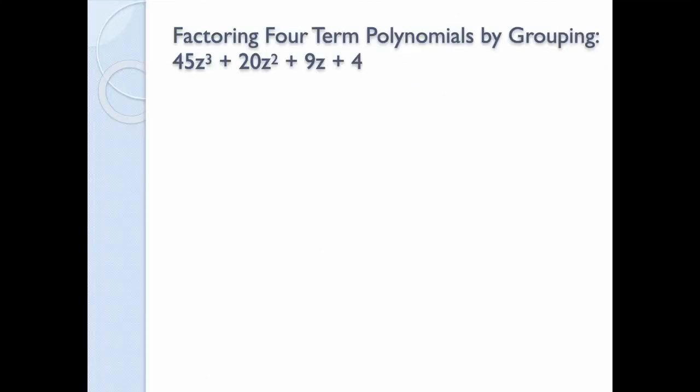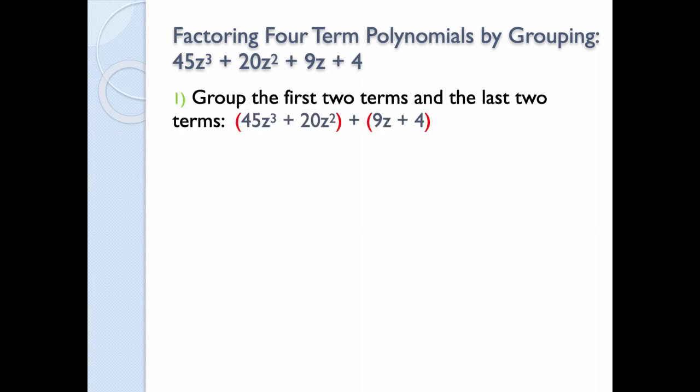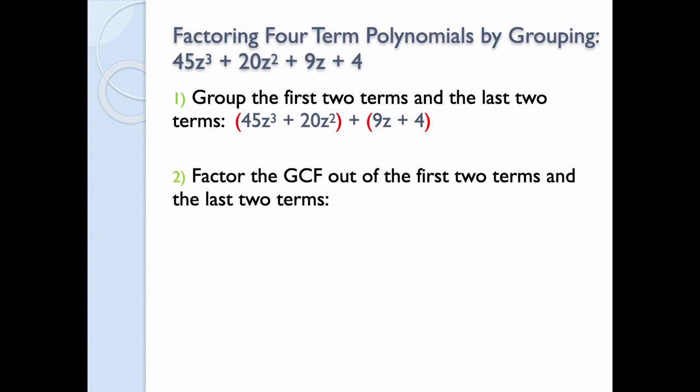Now it says factor the four-term polynomial by grouping, and we have a three-step process. The first step is to group the first two terms together and the last two terms together. Then, secondly, we look at each group separately and find the GCF for each group — we factor the GCF out of the first two terms and out of the last two terms.